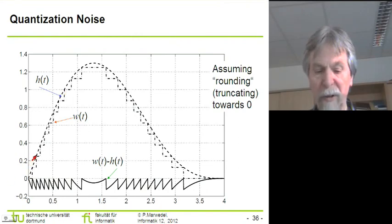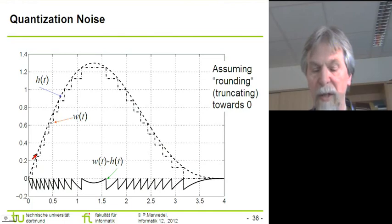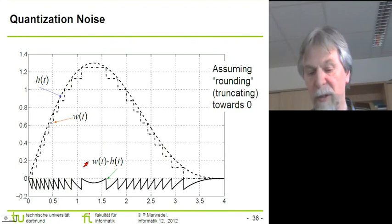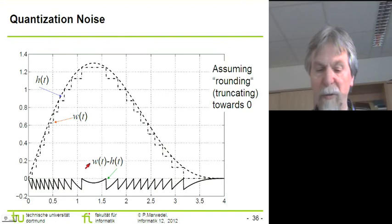So if we have, for example, this dashed line corresponding to our input signal, and if we are then using an analog-to-digital converter with a limited resolution, we will have the difference which is shown down here. So we have this sawtooth-like function which reflects the difference between these two signals. In this case, the function down here reflects the W, that's the digital value, minus the original value, and this is then negative.